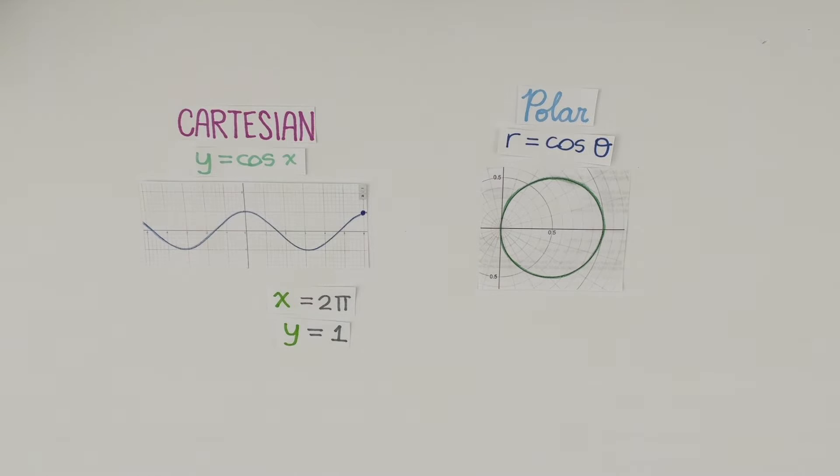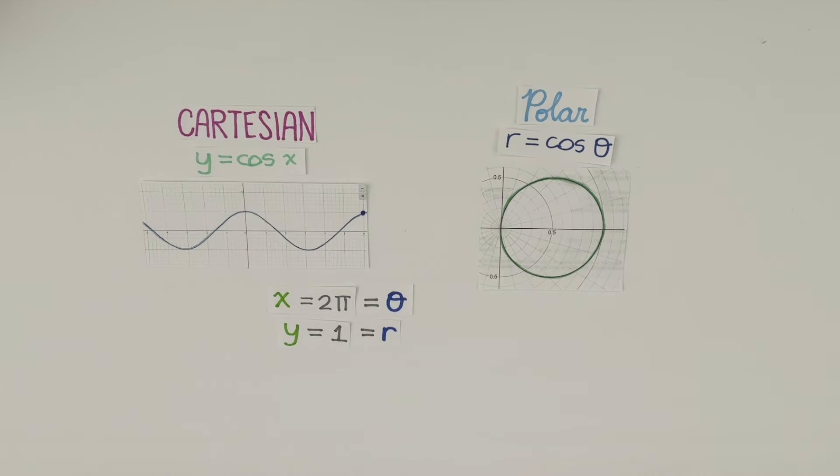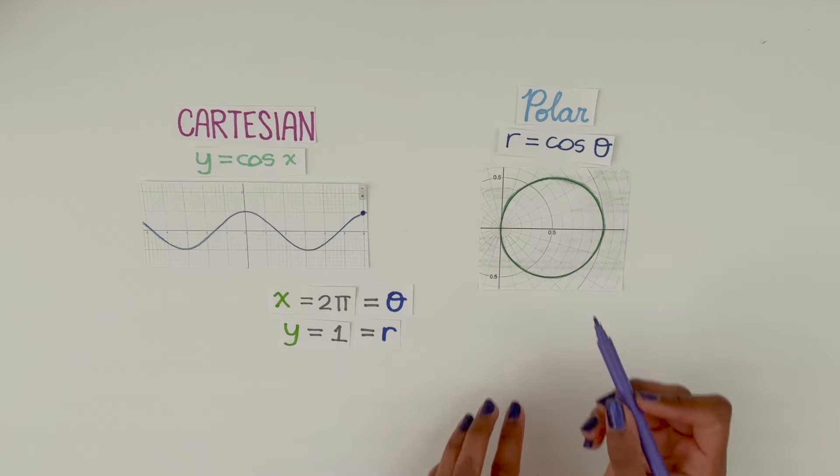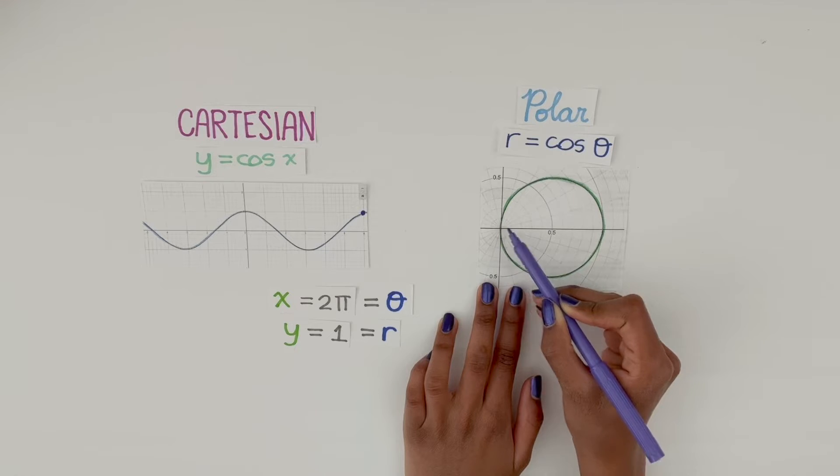And for polar, theta would be 2π. So r would also be 1, but it's represented differently. Instead of moving across the axis like we do with x, we move to the angle of 2π and put a point where the 1 mark is.